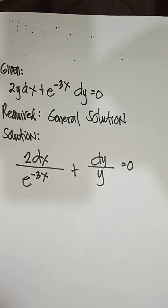Okay, another example. Given 2y dx plus e^(-3x) dy equals 0, required: general solution. Solution here.